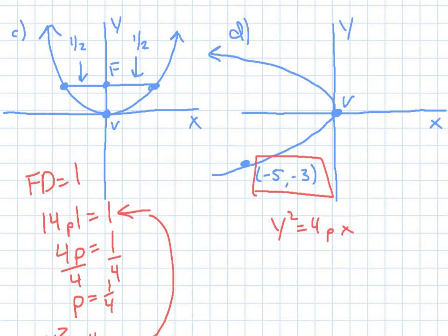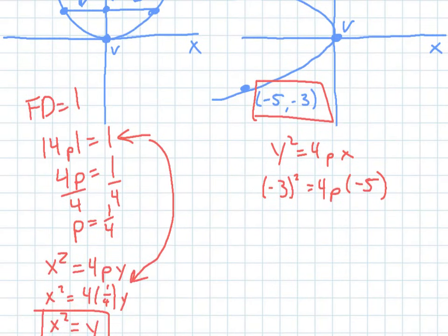So then now, or you could just find 4p actually. So let's talk about it that way. Okay, so I plug in negative 3 for y, and I plug in negative 5 for x, and now I want to solve. So negative 3 squared is 9, and you have 4p times negative 5. Let's divide both sides by negative 5, okay?